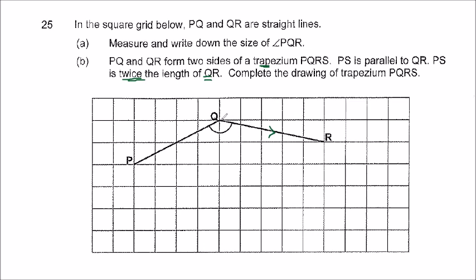Can you see that QR? It is actually one, two, three, four, five—five units to the right—and it's one unit down.